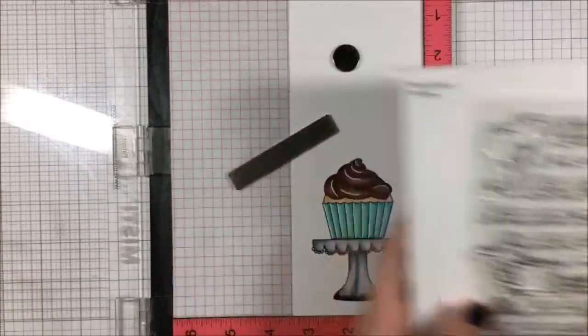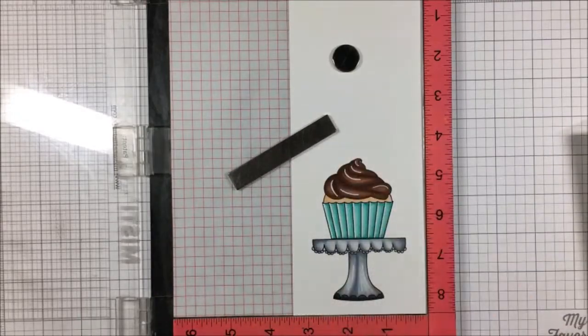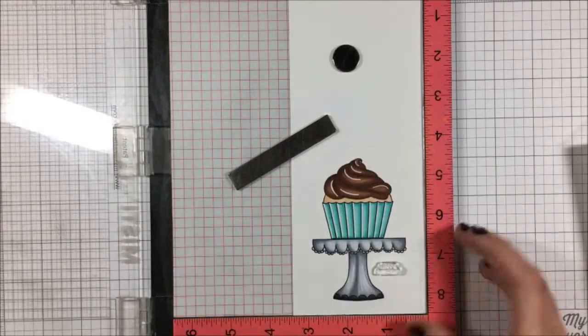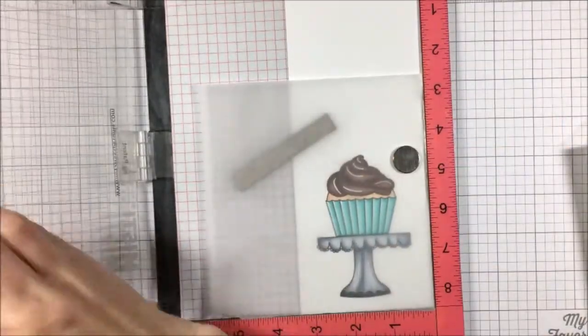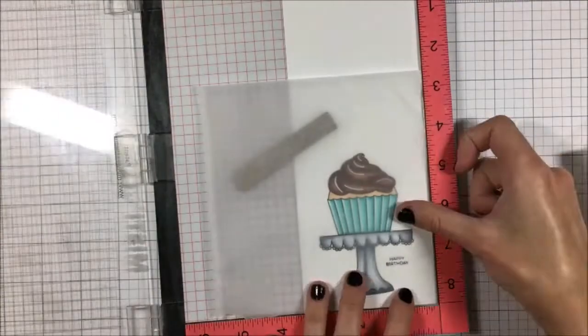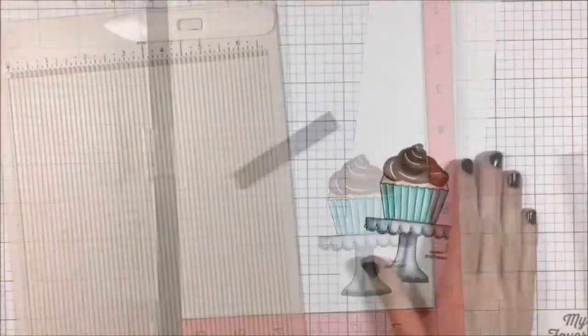Once that's done I'm going to stamp my sentiment. I'm using this Mama Elephant Big News stamp set and just trying out some of the sentiments until I found one I was happy with. I decided to go with Happy Birthday. Then I'm going to take my tracing paper and stamp that down to make sure I'm happy with how it's looking before I stamp it on the final card after I've already put in this much work.